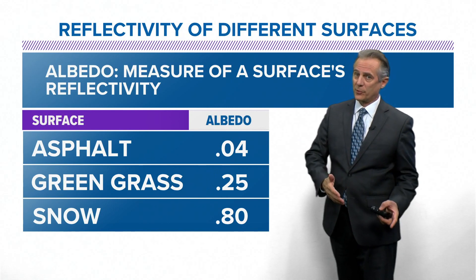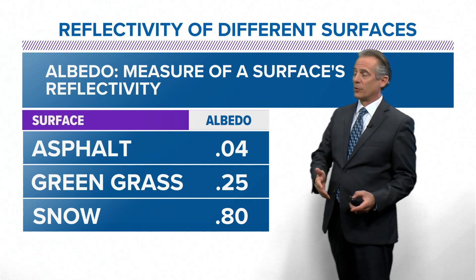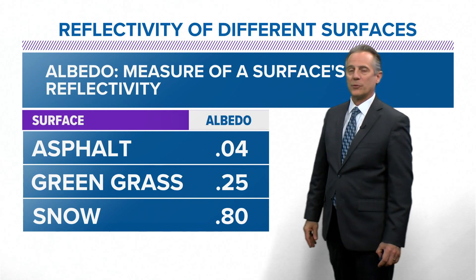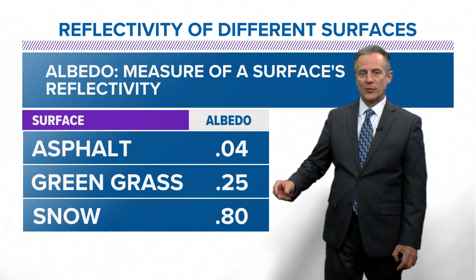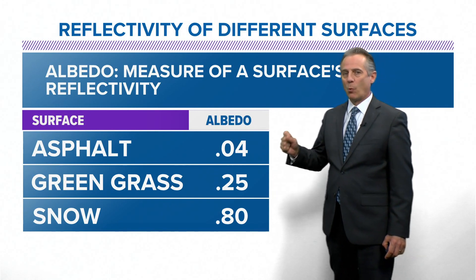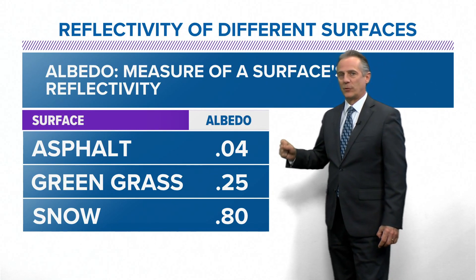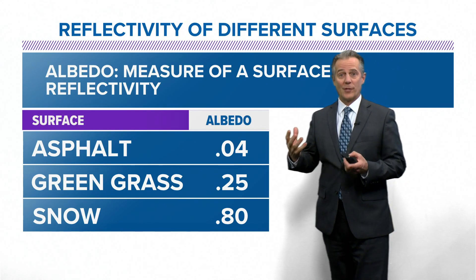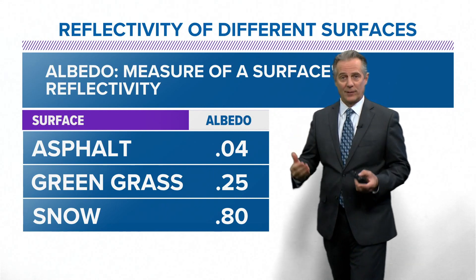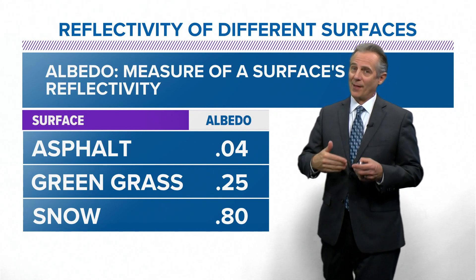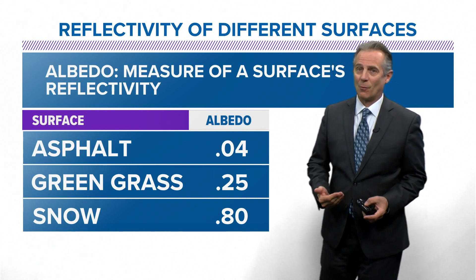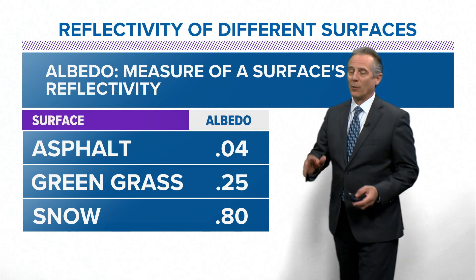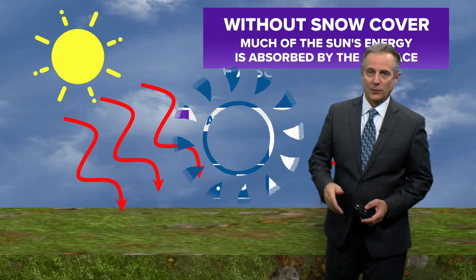75% then goes into the grass. And snow has one of the higher albedos of any surface — 0.80 — which means 80% of the sun's energy gets reflected away. That's why it's so hard to warm up when you've got fresh snow cover out there, and it can really have a big factor.